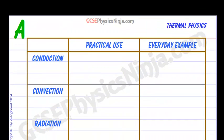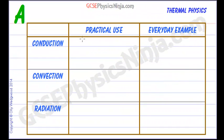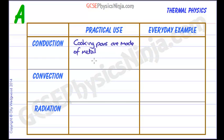Let's start off with conduction and a practical use. An obvious use of conduction is in cooking. Cooking pans are made of metal — they might have a plastic handle, but the body of the cooking pan is metal because metal is a good conductor. We want to get the heat from the cooker to the food as quickly as possible, so often they are copper-bottomed as very good quality cookware.